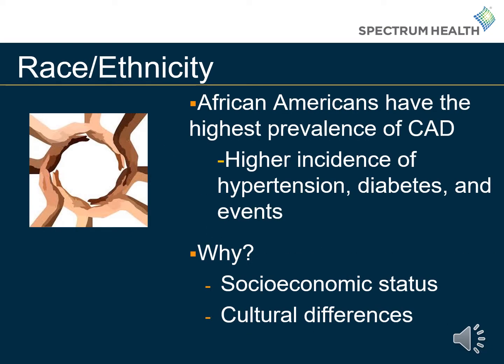Race or ethnicity is the last of the four risk factors that we cannot control. African Americans have the highest prevalence of coronary artery disease, including a higher incidence of hypertension, diabetes, and heart events. Part of this is due to socioeconomic status, which refers to an individual's social position based on income, education, occupation, and access to resources. A lack of income may prevent individuals from being able to afford healthy foods or transportation to the grocery store, forcing them to purchase processed foods from convenience stores. Furthermore, a lack of education on healthy behaviors and foods can be a huge barrier to living a heart-healthy lifestyle. There are also cultural differences in what foods are prevalent in our diet, which can affect our risk for heart disease as well.